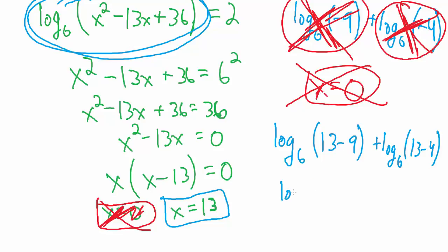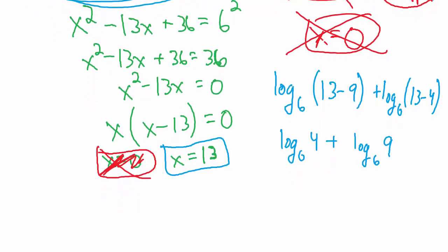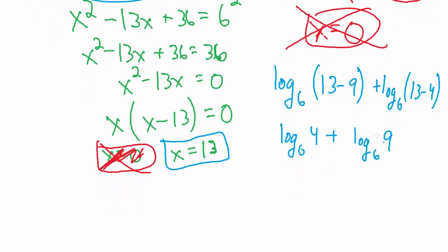Now 13 minus 9 is 4 so that's the base 6 log of 4 plus 13 minus 4 is 9 so that's the base 6 log of 9. So far so good. 4 is positive, 9 is positive. Everything so far is okay, it's all allowed.